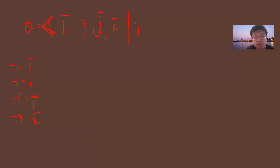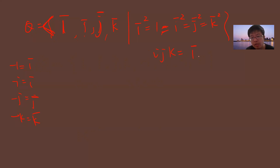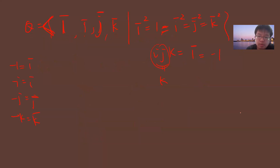So Q can be generated by {1-bar, i-bar, j-bar, k-bar} such that (-1)² = 1 and i² = j² = k² = -1. Also, there is the rule that ijk = -1, which you can verify since ij = k and then k² = -1.